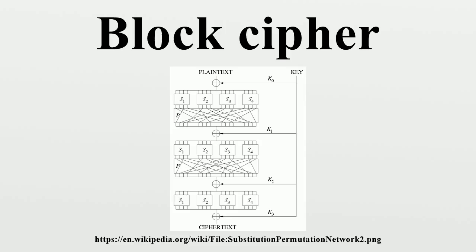Definition. A block cipher consists of two paired algorithms, one for encryption E, and the other for decryption. Both algorithms accept two inputs: an input block of size n bits and a key of size k bits, and both yield an n-bit output block.